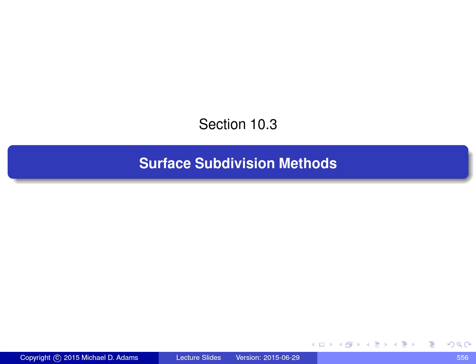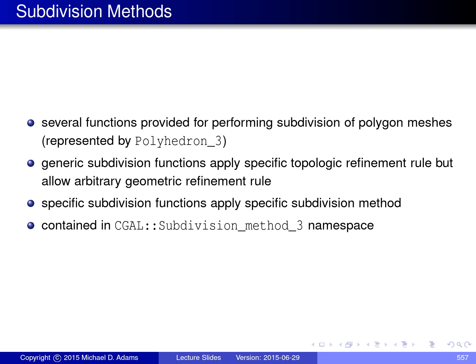I'm going to talk about the surface subdivision methods in CGAL. The CGAL library provides several functions for performing subdivision of polygon meshes represented using the Polyhedron_3 class. There are two types of subdivision functions provided: those that are somewhat generic in nature, implementing a particular topologic refinement rule but allowing an arbitrary geometric refinement rule to be plugged in — what I refer to as generic subdivision functions — and what I call specific subdivision functions, which use a specific topologic and geometric refinement rule to implement popular schemes like Loop subdivision, Catmull-Clark subdivision, and so on. The functions for doing subdivision are contained in the namespace subdivision_method_3.